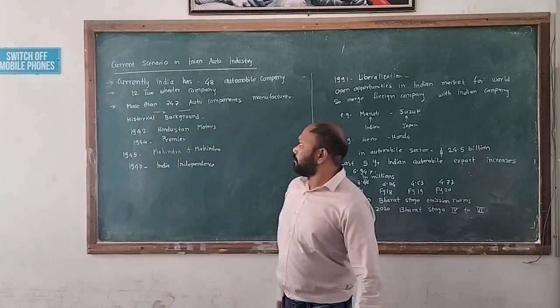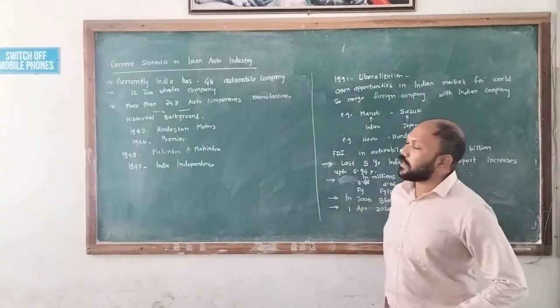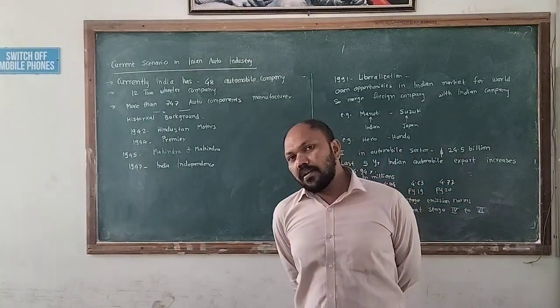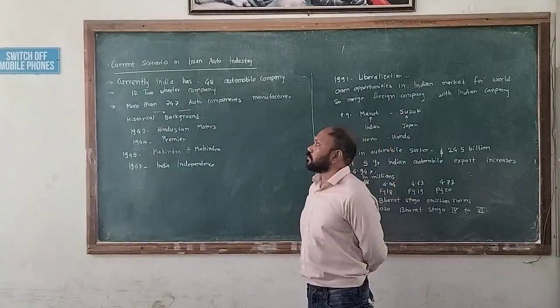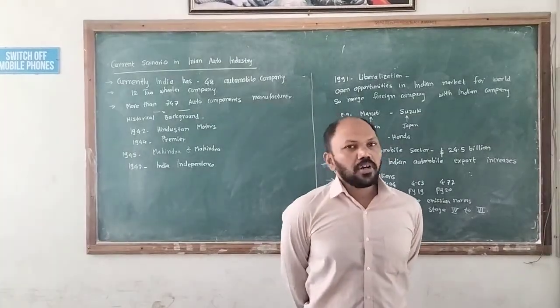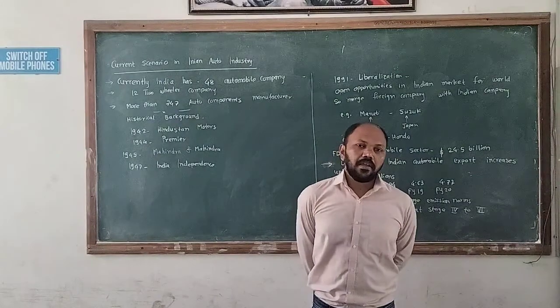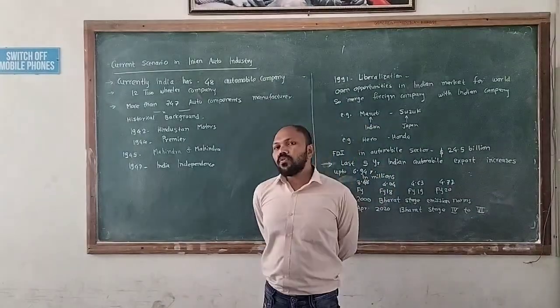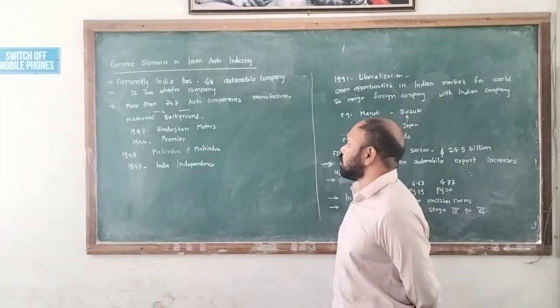Currently, India has 48 automobile companies in all over the states. In Maharashtra, Tata Motors is a big name and Mahindra and Mahindra, then different foreign companies like Ford and General Motors. Then 12 two-wheeler companies are there. If we consider two-wheeler manufacturers, Bajaj is the big name. Mahindra and Mahindra also launched two wheelers soon.